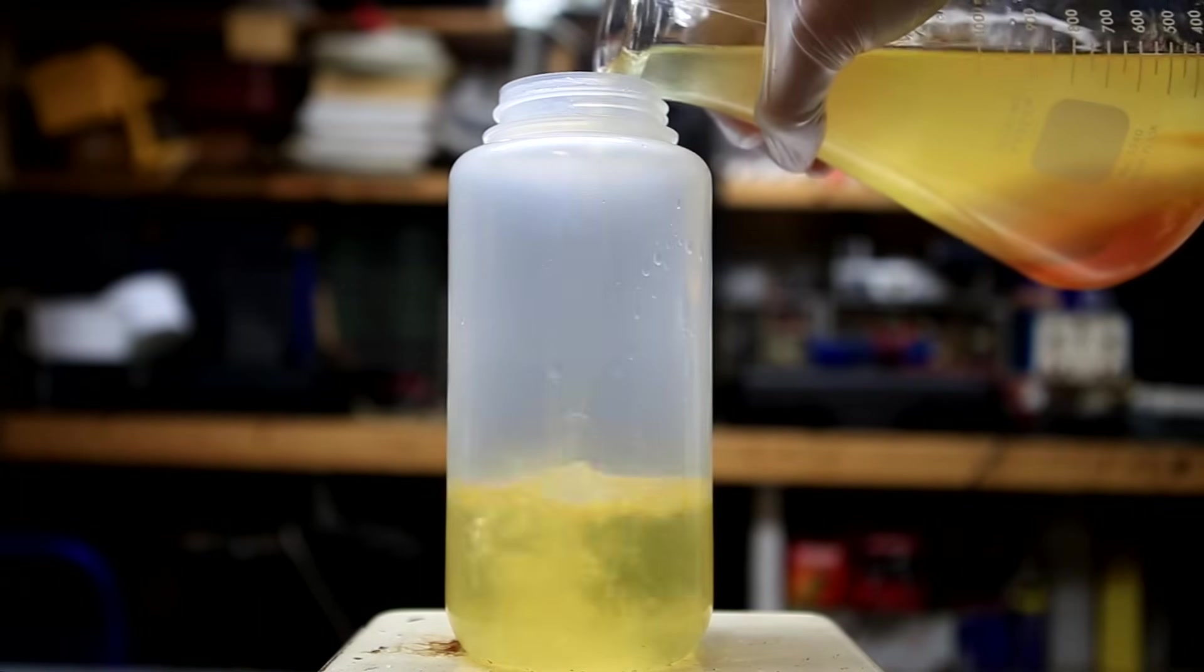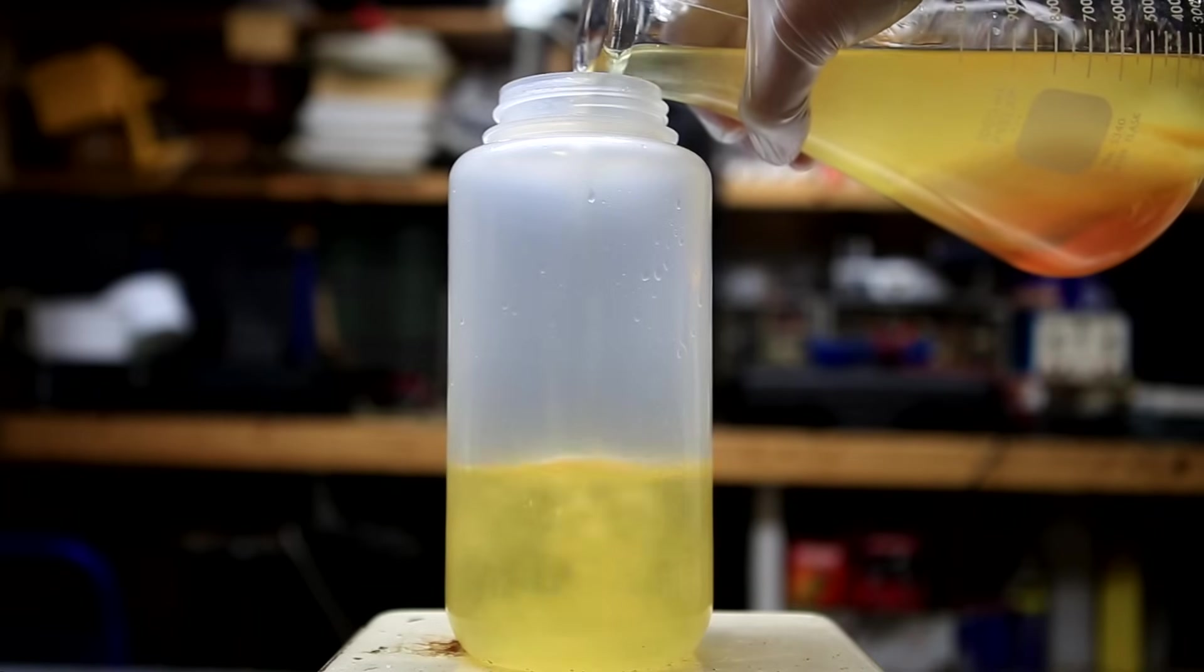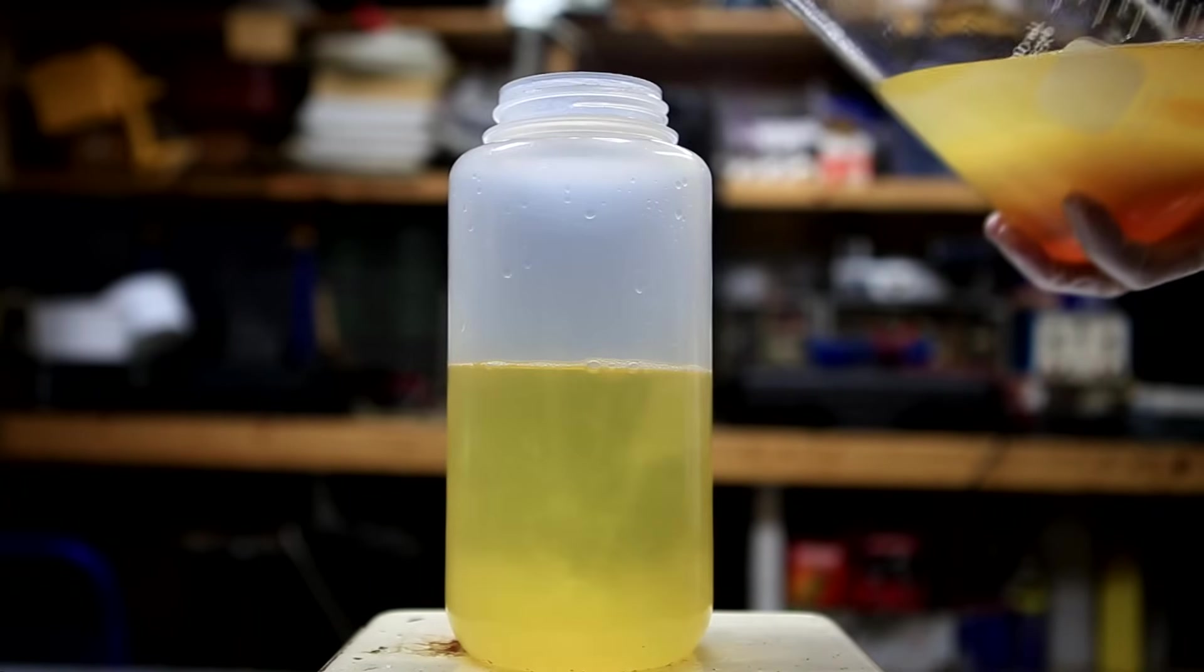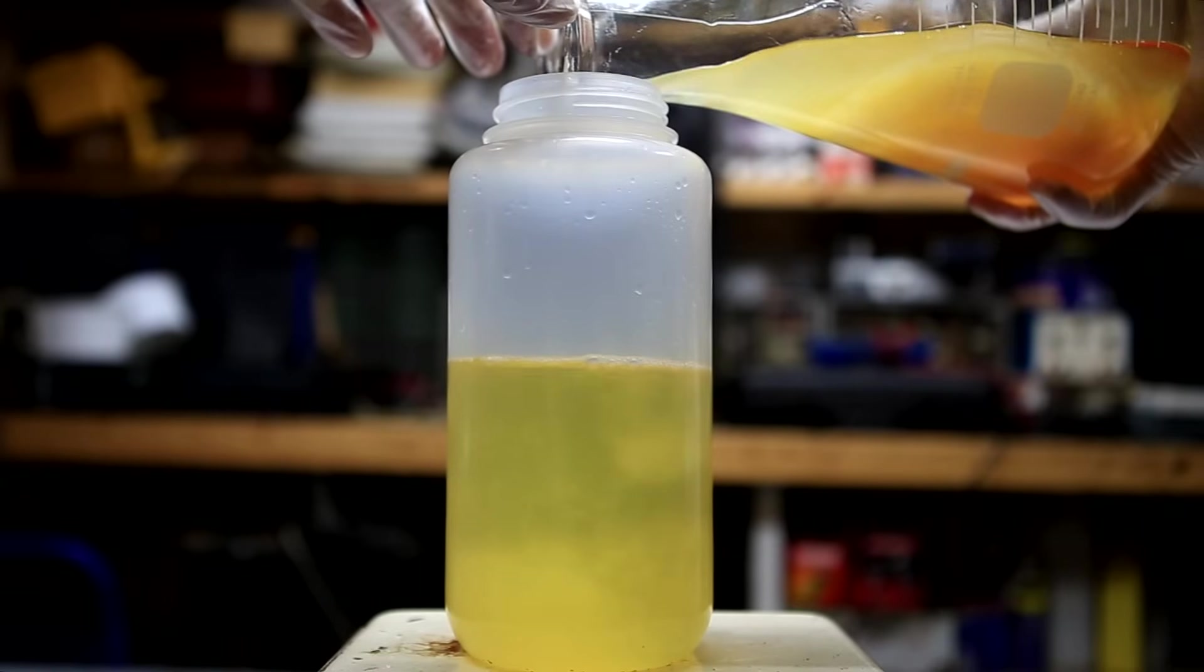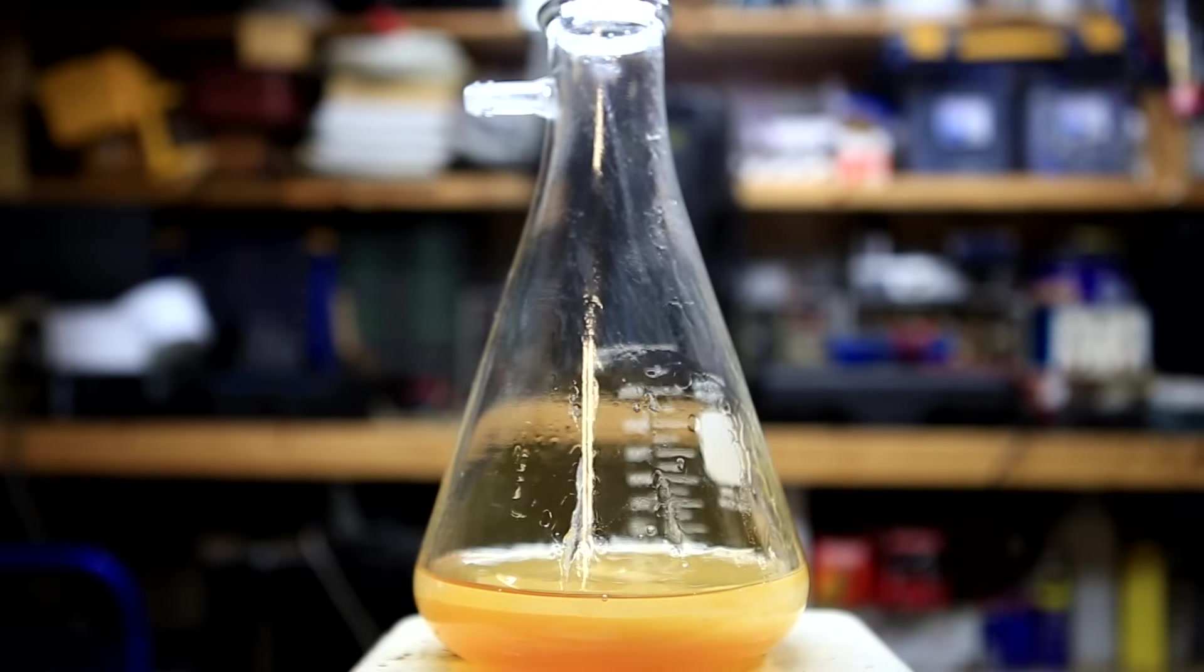You can see in the Erlenmeyer that there's a liquid portion, but there's also some chunks. The chunks are most likely gelled biodiesel, which tends to occur at some lower temperatures. At the bottom of the Erlenmeyer, I'm left with a messy mix of the gelled biodiesel and the glycerin.